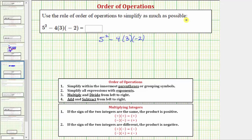So to begin simplifying, we want to simplify 5², which equals 5 times 5, which equals 25. So the expression simplifies to 25 minus 4 times 3 times negative 2.